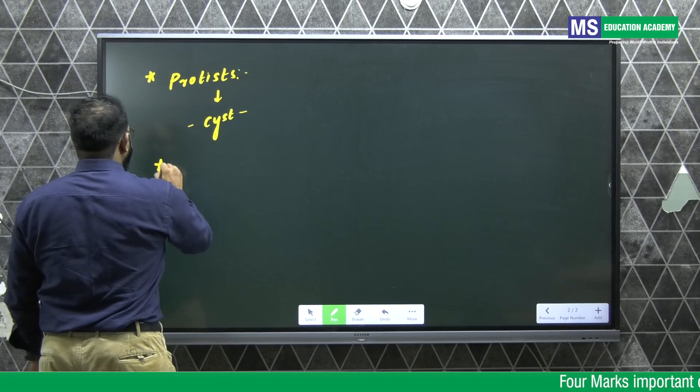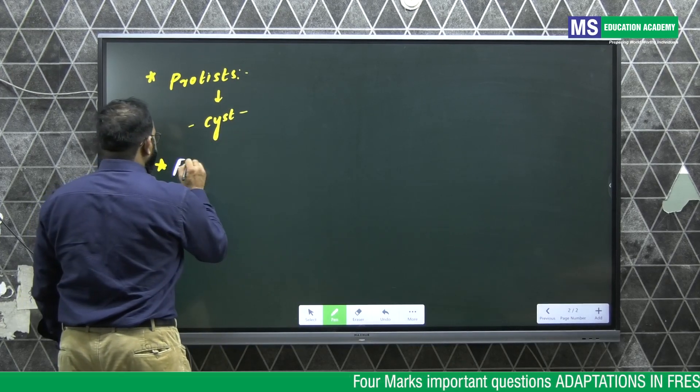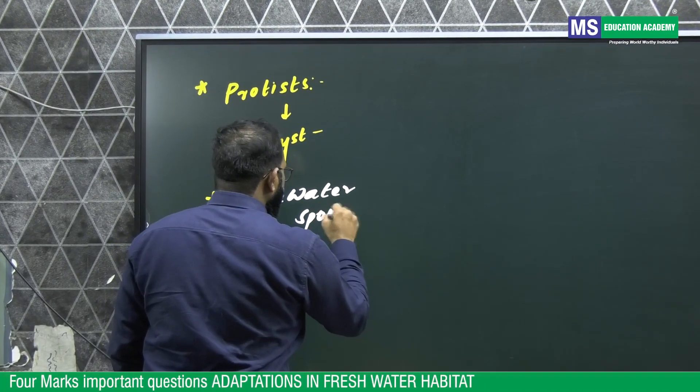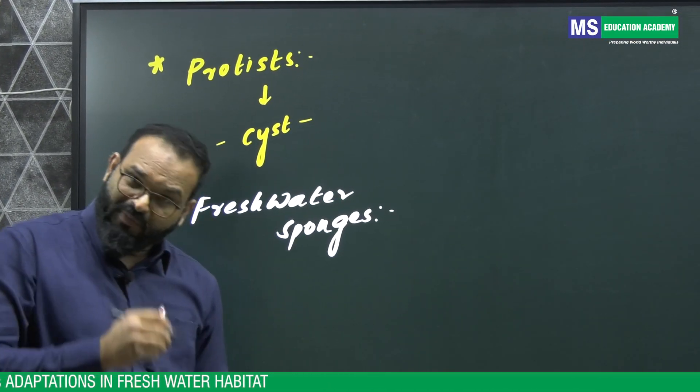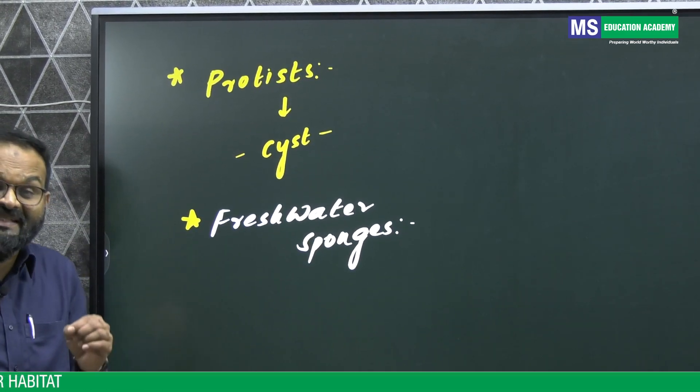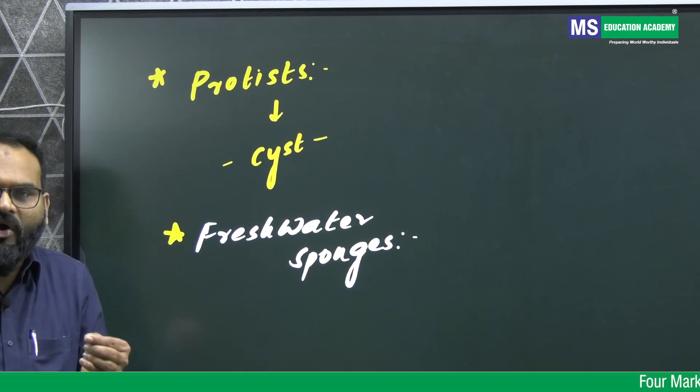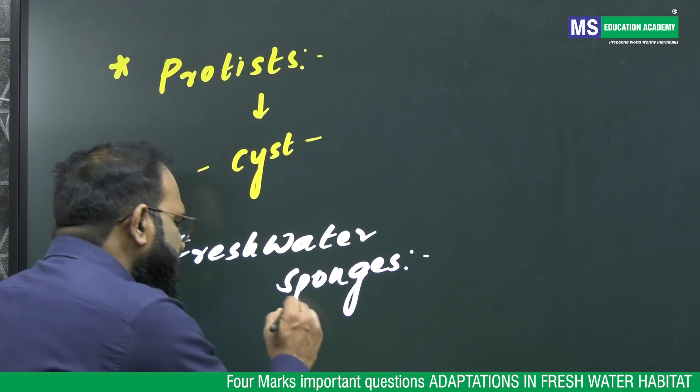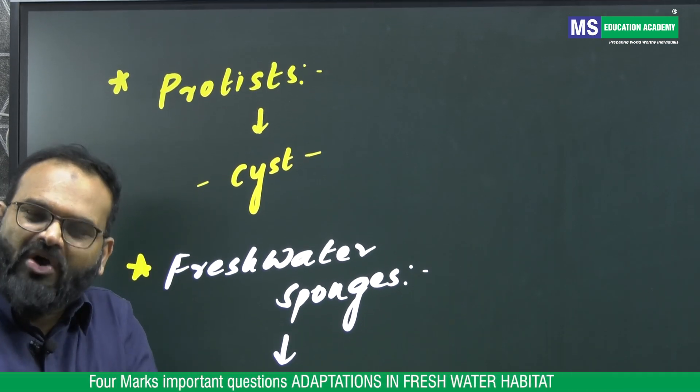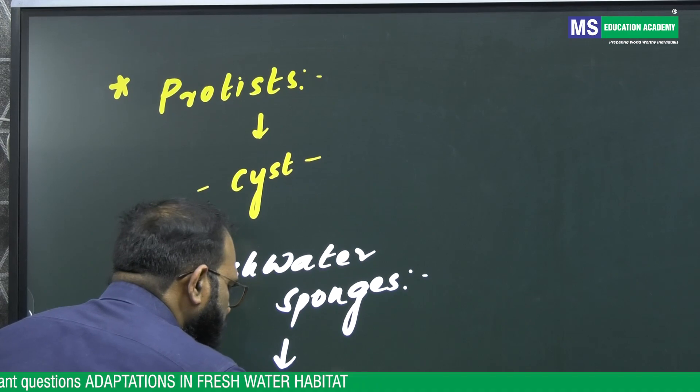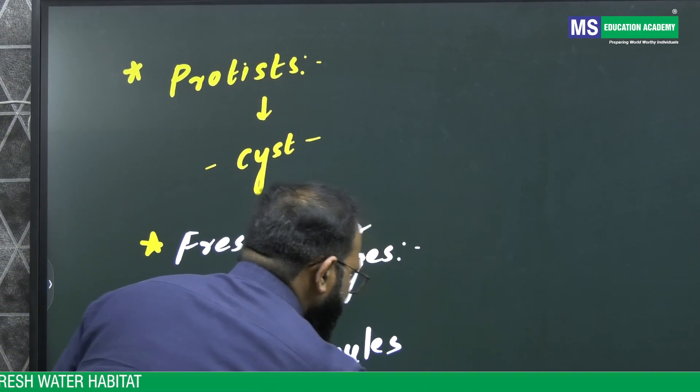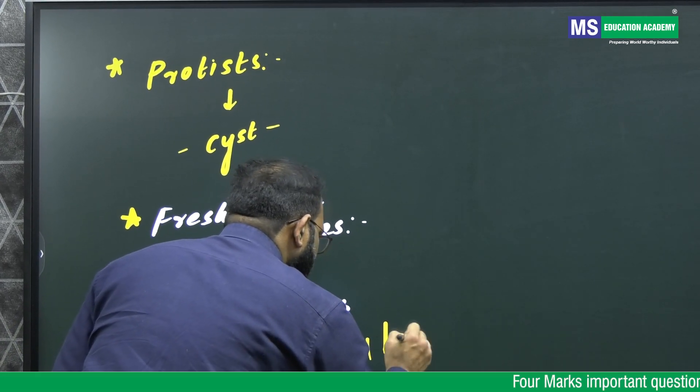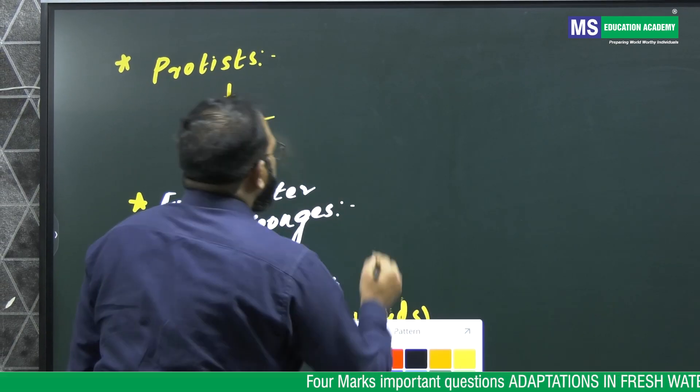If you observe freshwater sponges, how do these sponges tackle this problem? During summer season when water bodies are getting decreased or getting dried up, they tend to develop some asexual reproducing bodies called gemmules. Gemmules are internal buds.